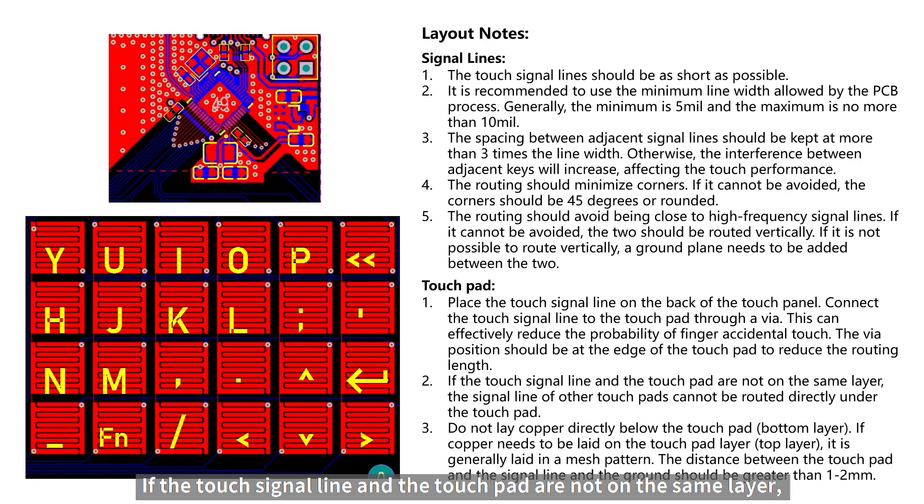If the touch signal line and the touchpad are not on the same layer, the signal line of other touchpads can be routed directly under the touchpad. Do not lay copper directly below the touchpad bottom layer. If copper needs to be laid on the touchpad layer, it's generally laid in a mesh pattern. The recommended distance between the touchpad or signal line and the ground is 1 to 2mm.